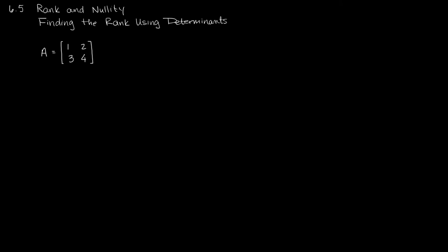We know how to find the rank of a matrix like this — we want to reduce it. This is a nice easy one. I'll take the first row, multiply it by negative 3, and add it to the second row. So negative 3 times this is 0. And negative 3 times this is negative 6. Negative 6 plus 4 gives me negative 2. So I've established my first pivot, and I have a 1 here with 0 below it.